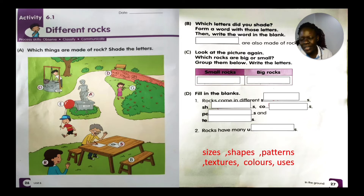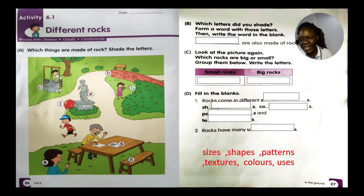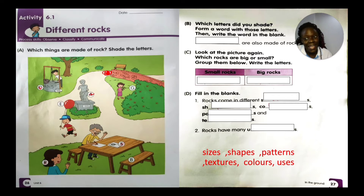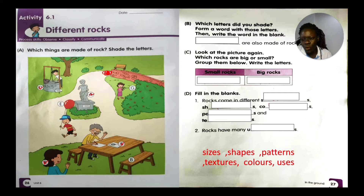In activity book pages 26 and 27, you need to shade the things that are made from rock. The wall — yes, made from rock. The statue — yes. The well — yes. The balloon — no. The paper — no. The bench — no, it's made from wood. The earring — yes. Color those that are made from rocks.